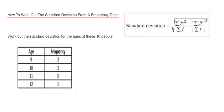Hi guys, welcome back. Today I'm going to show you how to work out the standard deviation from a frequency table. To do this, we're going to use the formula shown in the red box: the square root of sigma fx squared divided by sigma f, minus the bracket sigma fx divided by sigma f, close bracket, all squared.